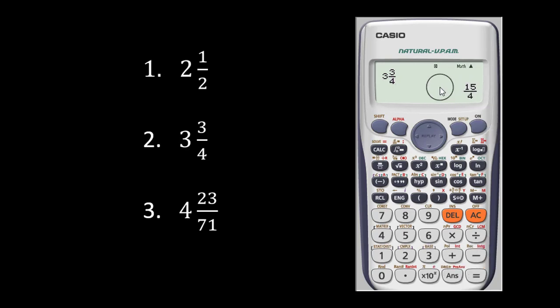Automatically, it gives the answer to you by default. Alright. So 3 whole number 3 over 4 is simply the same as 15 over 4. Now let's come to the third one.